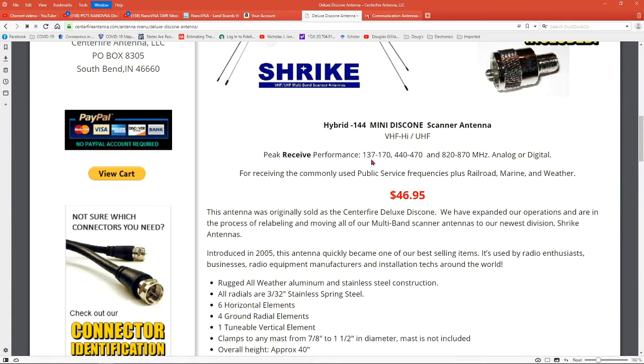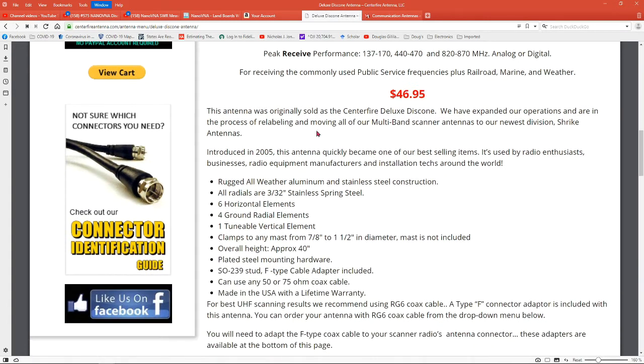The peak received performance is 137 to 170, 440 to 470, and 820 to 870 analog or digital. It says this antenna was originally sold as a CenterFire deluxe disc cone, so that's what I have.